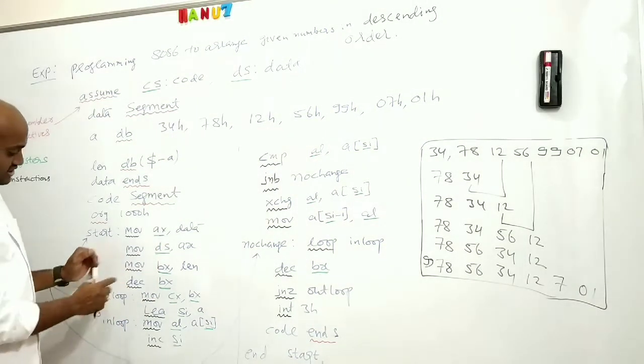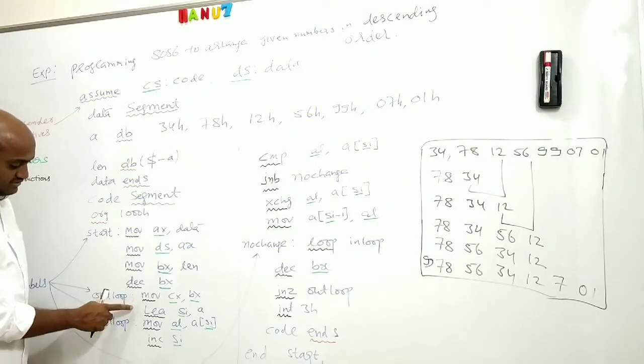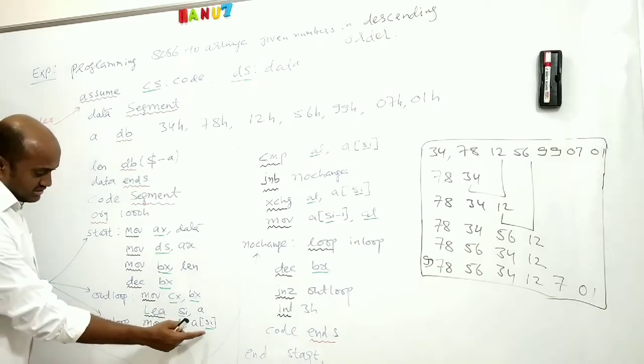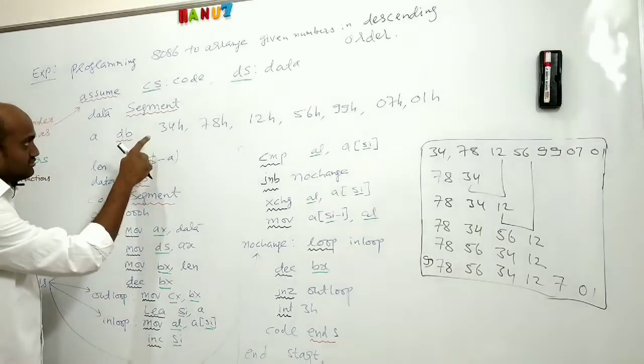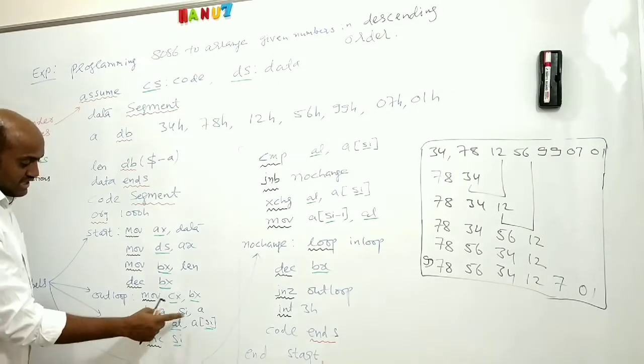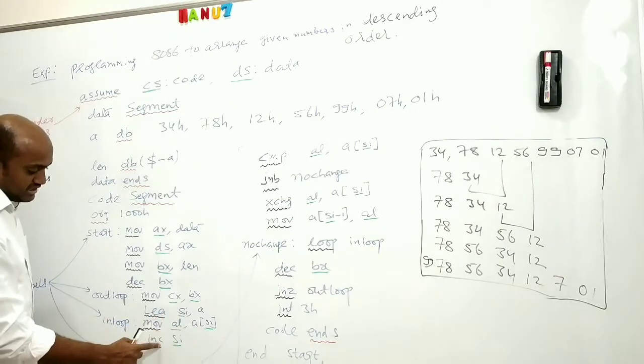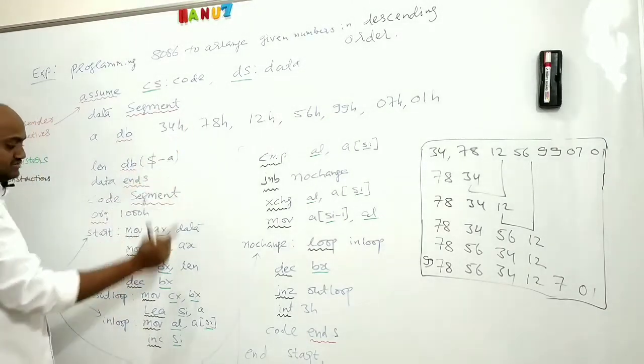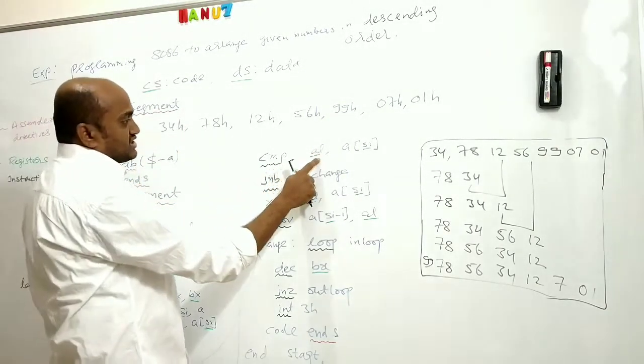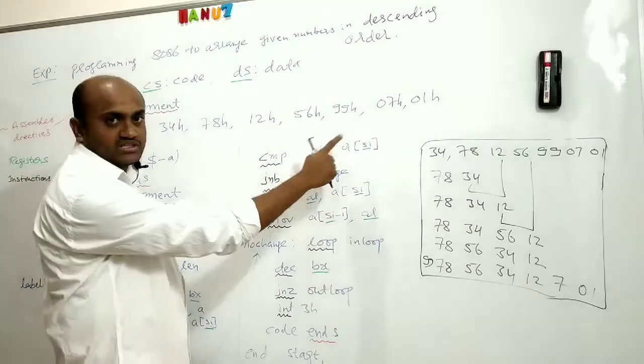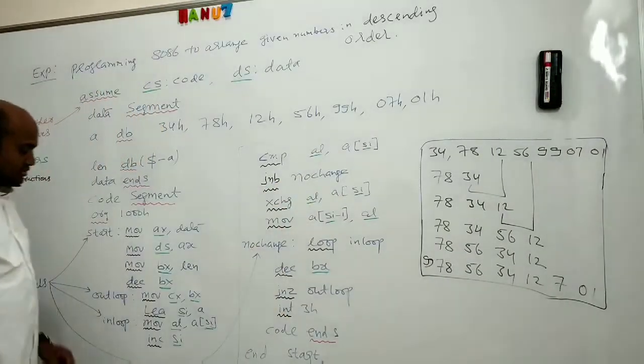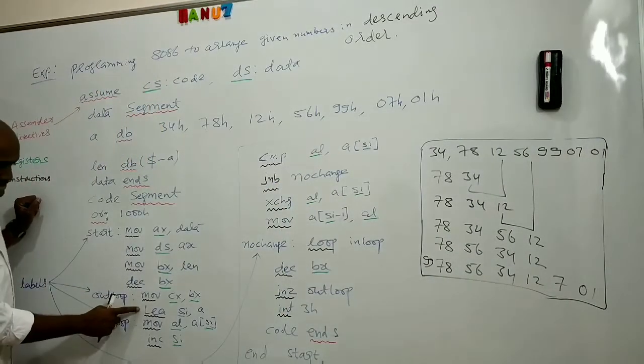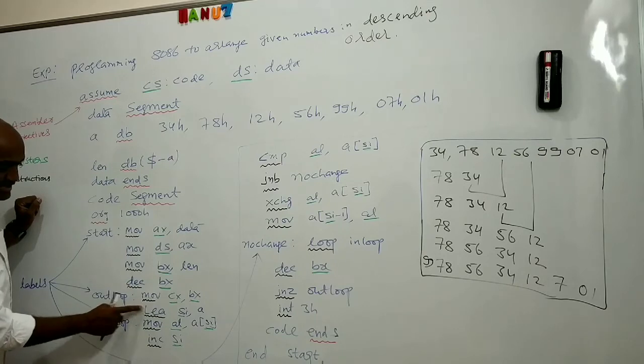Now coming to the logic of the program, how did we implement this. First I am copying the number, that is first number into AL, and then I am incrementing SI. SI is incremented to second memory location. Now I am comparing the first number which is there in AL with the second number. So you observe clearly here, I wrote instruction LEA.